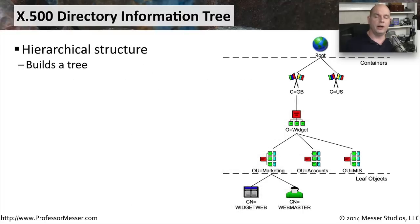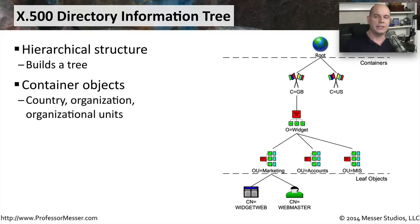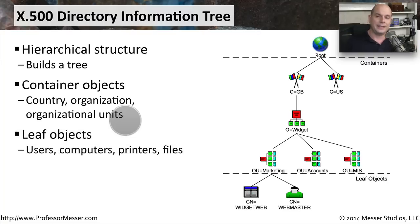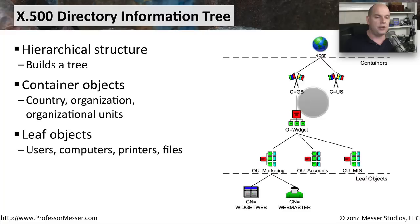This modular nature of distinguished names in LDAP allows us to build a tree of different devices. We've broken the tree out into two pieces: container objects that store other objects within them — such as the country, the organization, and the organizational units — and within these containers we have leaf objects, which are the individual devices, such as users, computers, printers, and files.